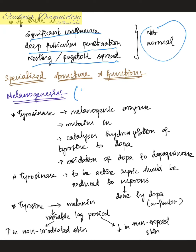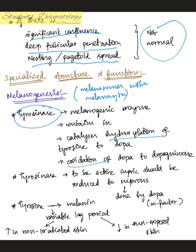The specialized structure and function — number one is melanogenesis, which is the synthesis of melanosomes within melanocytes. The main enzyme is tyrosinase, which catalyzes hydroxylation and oxidation reactions. Tyrosinase contains copper; for tyrosinase to be active, copper must be converted from the cupric to the cuprous form, for which DOPA acts as a cofactor.